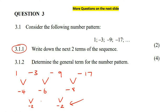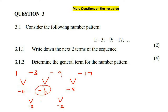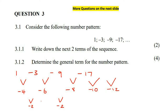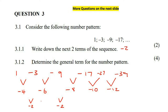The first question says: write down the next two terms. You just carry on the pattern. The first differences go minus 4, minus 6, minus 8, so the next ones would be minus 10 and minus 12. So, minus 17 minus 10 gives us minus 27. And then minus 27 minus 12 gives us negative 39. So, the next two terms would be negative 27 and negative 39.